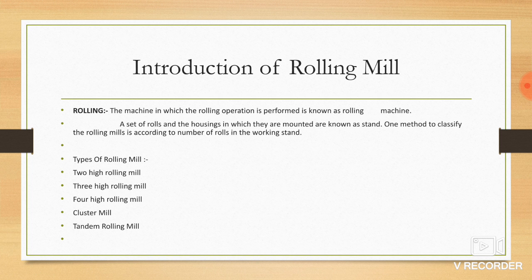Types of rolling mill: two high rolling mill, three high rolling mill, four high rolling mill, and tandem rolling mill.